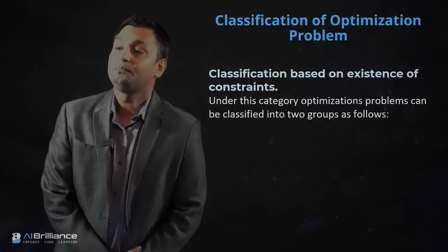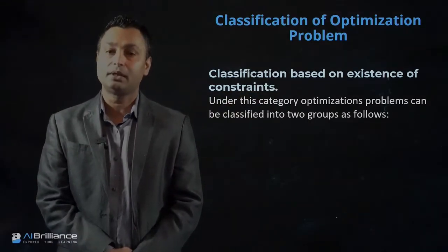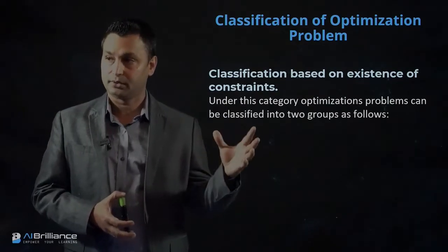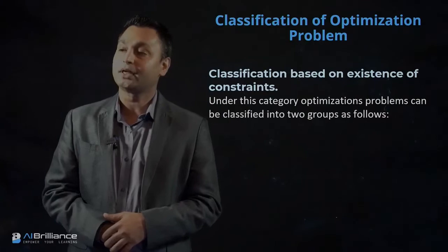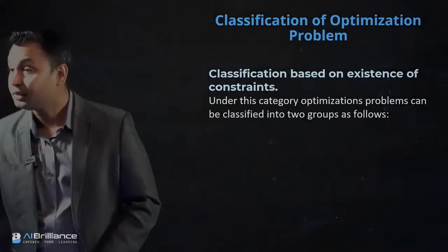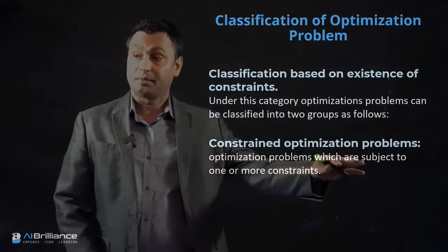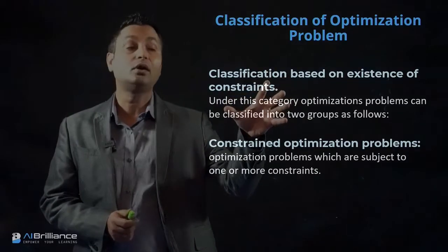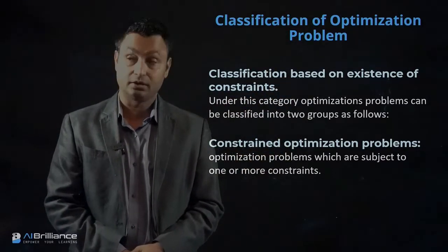The first category is defined based upon the existence or non-existence of constraints. Under this, your optimization problem can be classified into two different categories. One is essentially a constrained optimization problem, where you have an objective function and on top of that you also have a set of constraints.